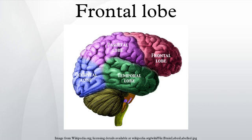The frontal lobe is one of the four major lobes of the cerebral cortex in the brain of mammals. The frontal lobe is located at the front of each cerebral hemisphere and positioned anterior to the parietal lobe and superior and anterior to the temporal lobes.